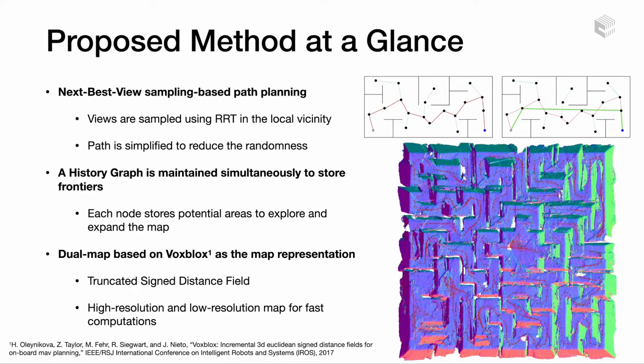As a mapping framework, we use a modification of Voxblox. Voxblox is an existing framework which builds truncated signed distance fields and converts it to Euclidean signed distance fields very fast and efficient. Our modification is to maintain a dual map, which consists of a high-resolution and a low-resolution map for fast computations.